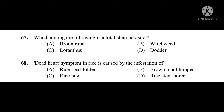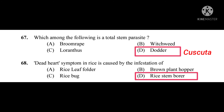Question number 67: Which among the following is a total stem parasite? The correct answer is Dodder, which is Cuscuta. Question number 68: Dead heart symptom in rice is caused by the infestation of. The correct answer is rice stem borer.